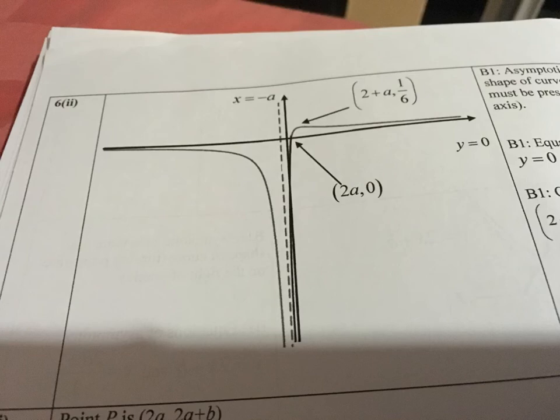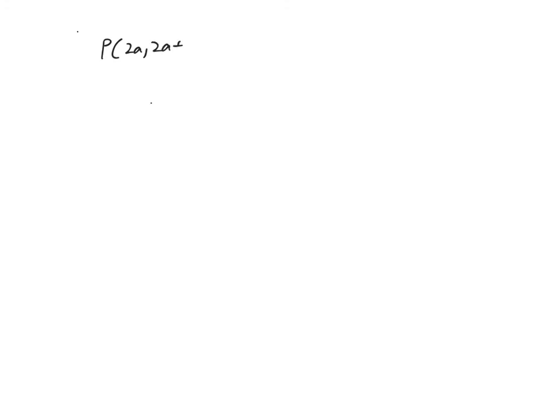Next is part 3, which is quite well done. You are supposed to find the coordinates of point p, which is (2a, 2a plus b), by solving the intersection of the two asymptotes. Most of you were able to get that. After that, the question asks you to show that p lies on the equation y equals mx plus b plus 2a minus 2ma.